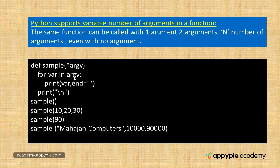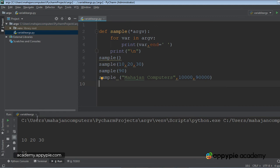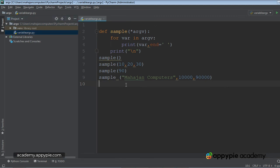Now we come to the first call: sample() with no arguments. Args would contain zero arguments, so this loop will not execute even once. This is how the variable number of arguments feature works. This is the program which I have already written in PyCharm — you can see it's the same program I have explained.